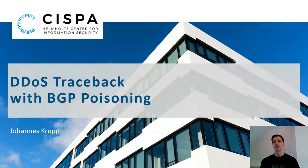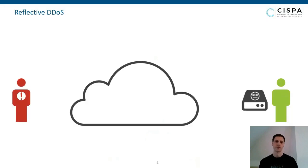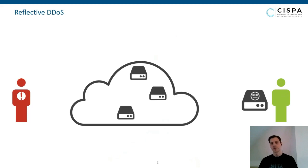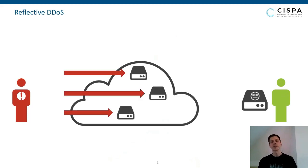Just a quick recap — the type of DDoS that we're interested in is the so-called reflective DDoS attack. We have an attacker on the left side and the victim on the right side. What the attacker does is pick some UDP-based services on the open internet and send them requests, but he spoofs the source address.